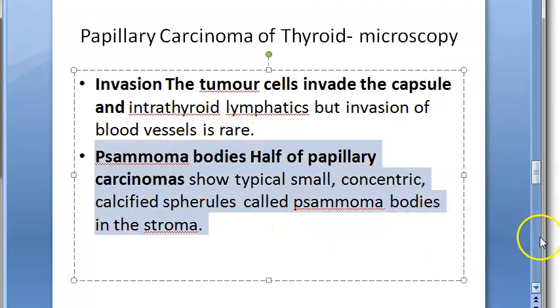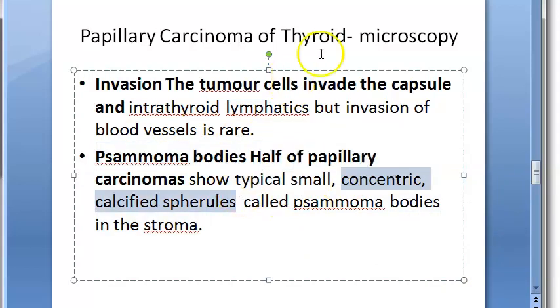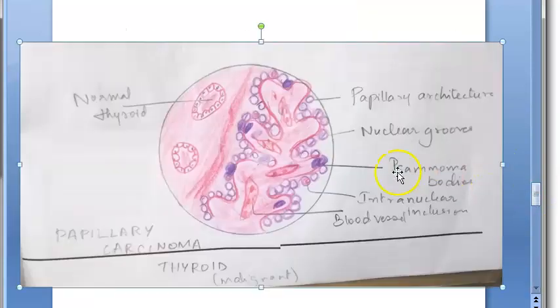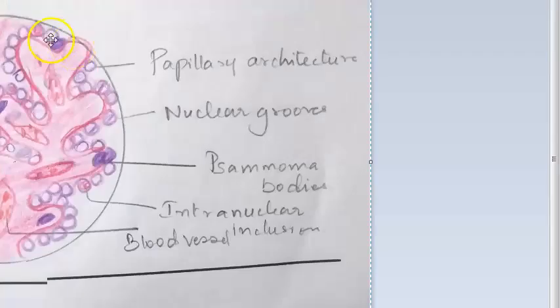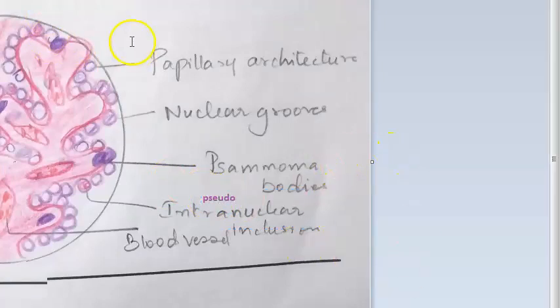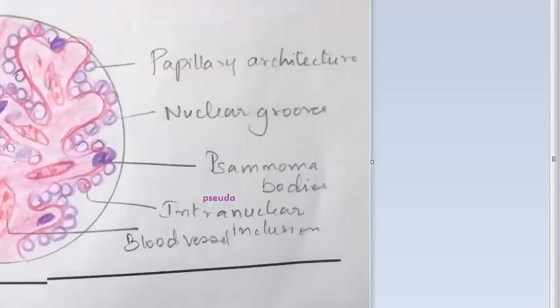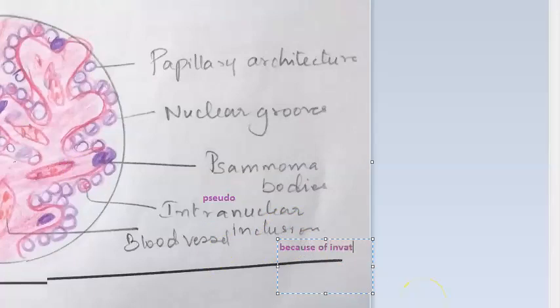Psammoma bodies are also a key microscopic feature — these are concentric calcified spherules. Remember, the intranuclear inclusions are not actual inclusions; they are pseudo-inclusions because of the invagination of cytoplasm.